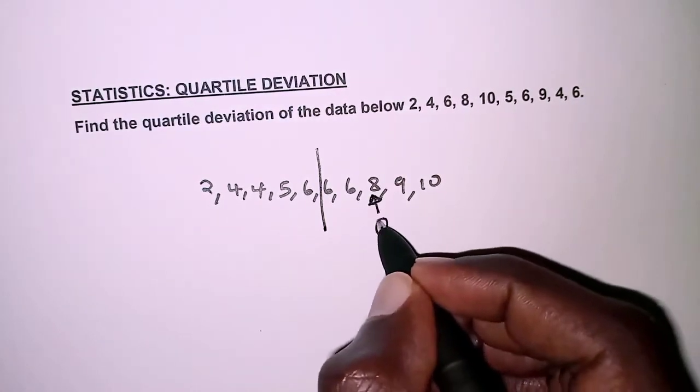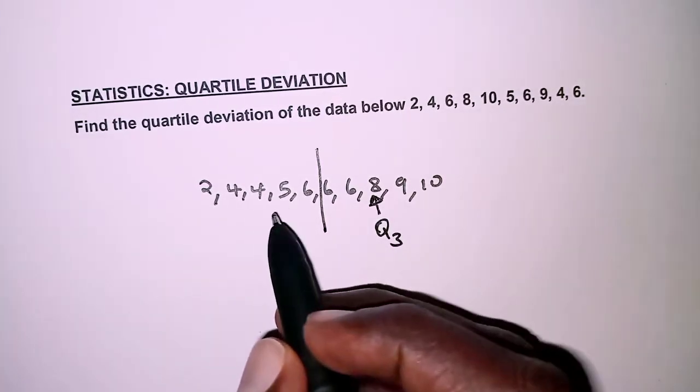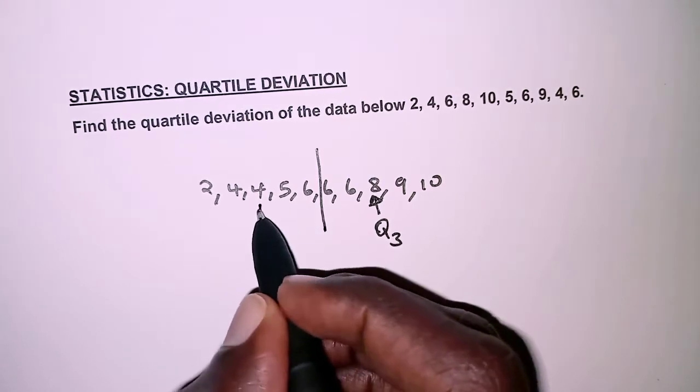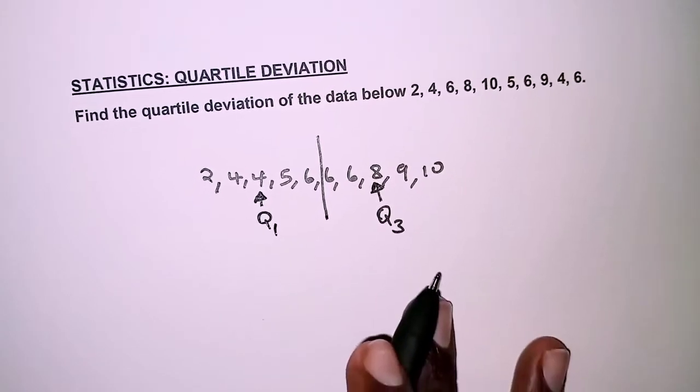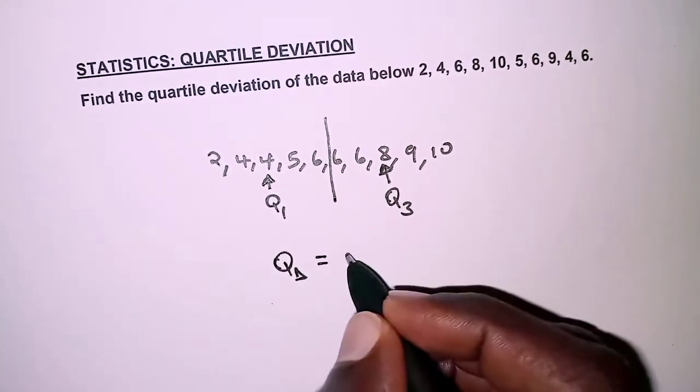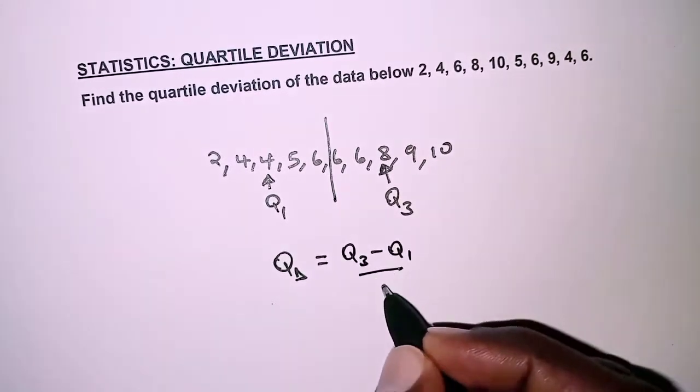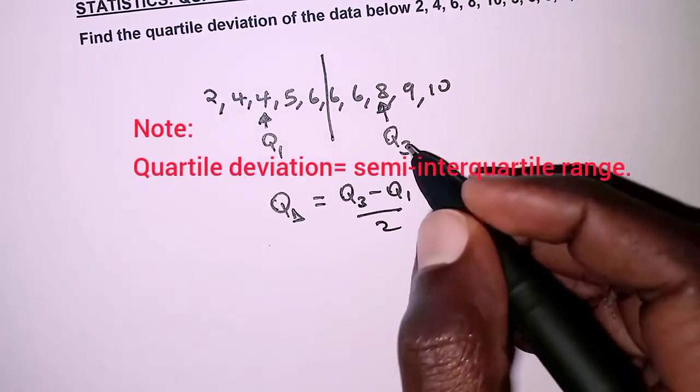So that gives us the upper quartile Q3. And then on the lower half we have 4 here as the lower quartile. So the quartile deviation is given by Q3 minus Q1 over 2.